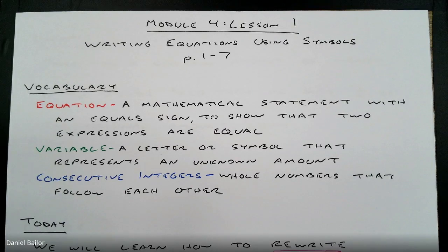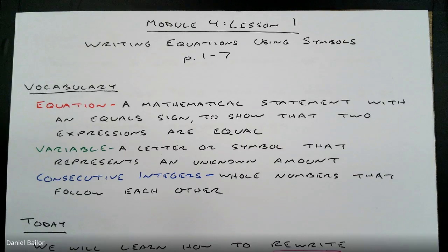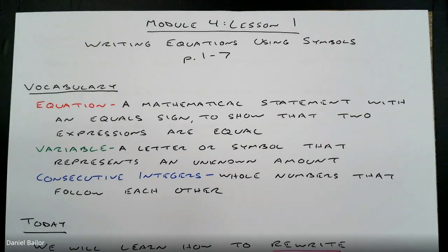Module 4, Lesson 1 is all about writing equations using symbols. We're going to be practicing equations in Module 4 — how to write equations, how to solve equations, how to use equations to show real-world problems. You'll need pages 1 through 7 of your Module 4 workbook. You can tear those out.